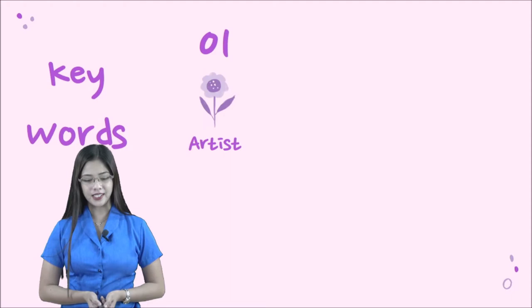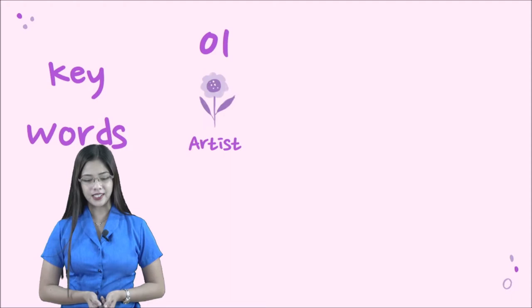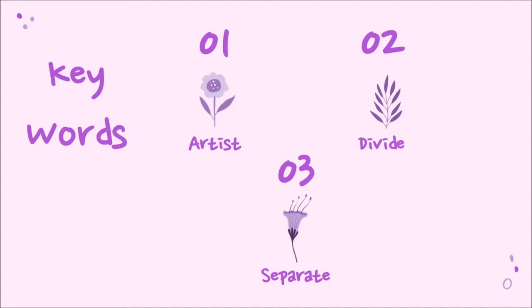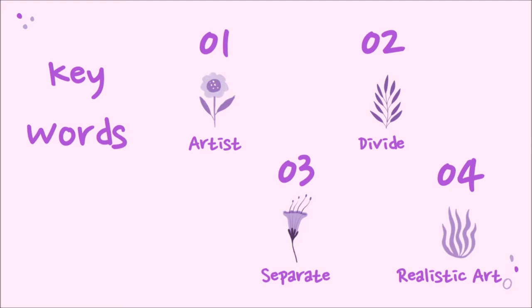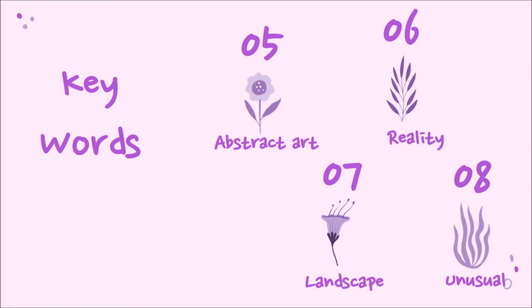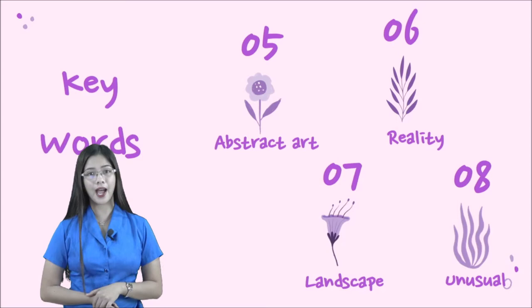Our first keyword is artist. The second one is the word divide. For the third keyword, we have the word separate. And for the fourth one, we have the word realistic art. So let's repeat the first four words: artist, divide, separate, and realistic art. We have another four: abstract art, reality, landscape, and unusual. In total, we have eight keywords for our passage today. So let's define each word one by one.